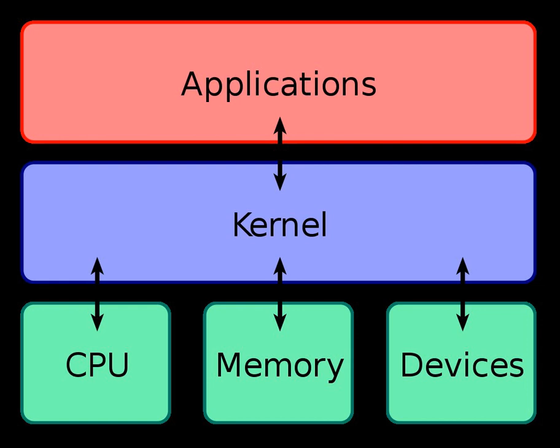Input/output devices include peripherals such as keyboards, mice, disk drives, printers, USB devices, network adapters, and display devices. The kernel allocates requests from applications to perform I/O to an appropriate device and provides convenient methods for using the device, typically abstracted to the point where the application does not need to know implementation details of the device.